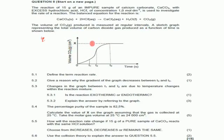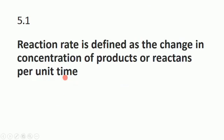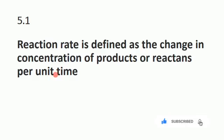CO₂ is on the product side and they choose a gas to measure the reaction rate. Question 5.1 says: define the term reaction rate. Reaction rate is defined as the change in concentration of a product or reactant per unit time. Per unit time means it can be measured in minutes, seconds, or hours — whatever unit of time is chosen.